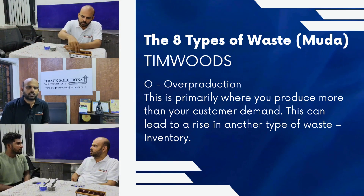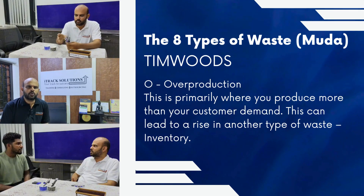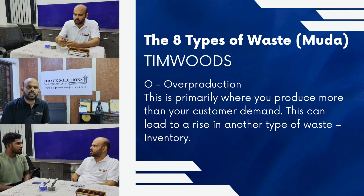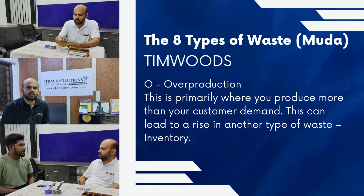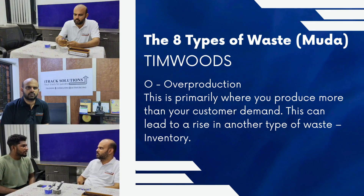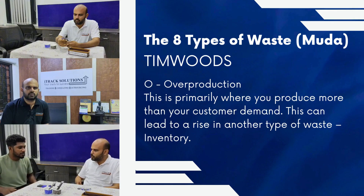In the above process you would have seen how the operations team produced more finished goods than the customer demand, which led to overproduction. In the below process, the customer demand is assessed first and based on that the production is planned, which helped eliminate overproduction.